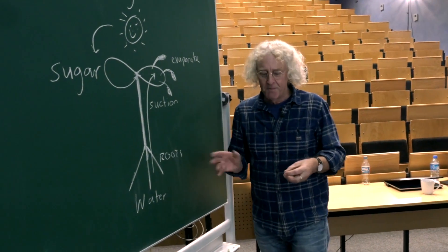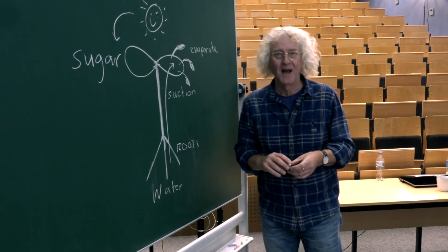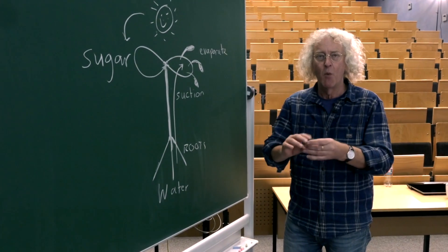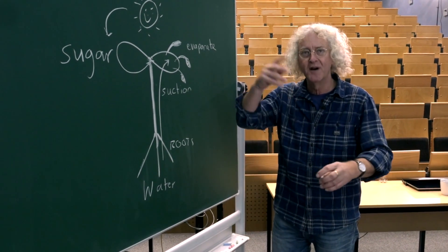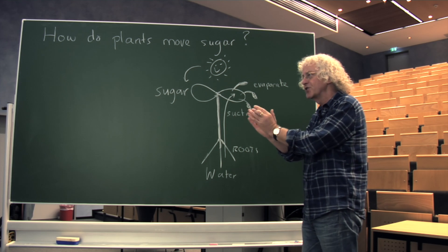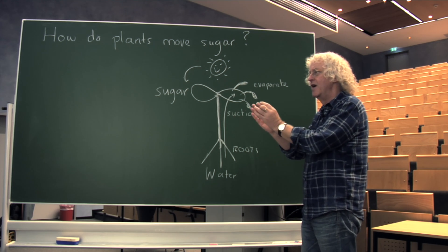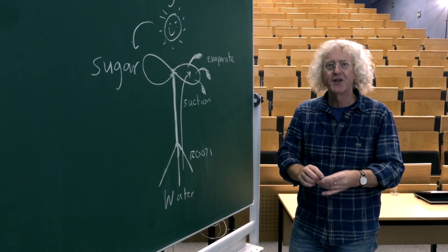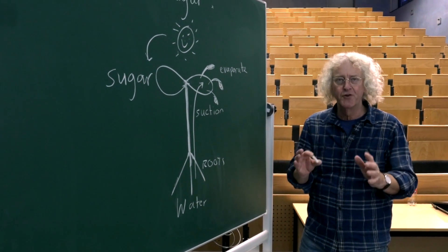The way that plants move sugar through themselves is very different to us. We have a heart and we pump blood with sugar around our arteries and our veins. These are outside cells. The phloem is a living cell. So there's a connection of living cells all the way through plants.